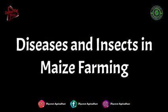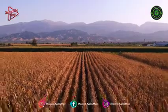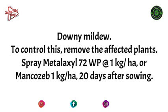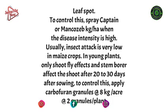Diseases and Insects in Maize Farming: The main diseases in maize farming are Downy Mildew and Leaf Spot. For Downy Mildew, remove the affected plants and spray Metalaxyl 72WP at 1 kg per hectare or Mancozeb at 1 kg per hectare, 20 days after sowing. For Leaf Spot, spray Captan or Mancozeb per hectare when the disease intensity is high. Insect attack is generally very low in maize crops. In young plants, shoot fly and stem borer affect the shoot after 20–30 days after sowing — to control this, apply Carbofuran granules at 8 kg per acre, at 2 granules per plant.